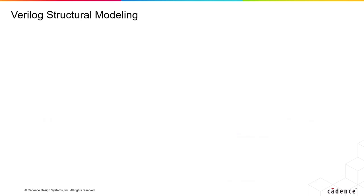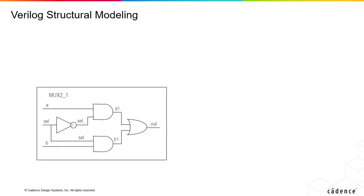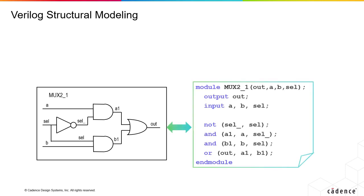Verilog Structural Modeling. You can essentially take a structure for a logic circuit and directly code the gates themselves. So here is a MUX that has an output named out. Then here A, B, and SELECT are its inputs.